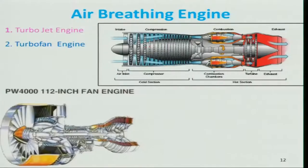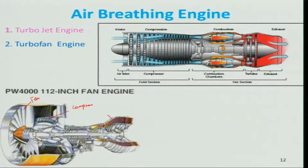The turbo-fan engine is slightly different. The compressor, combustion chamber, and turbine together constitute the gas generator — which generates the hot gas. Apart from the gas generator, there is a fan at the front, a compressor, turbine, and combustion chamber.